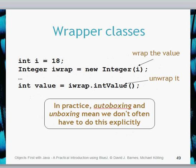One way — the long-winded, explicit way — is to do this manually. You create a type int called i which is 18, and then you create your Integer object called iWrap. When you assign it, you create a new Integer object and pass the primitive type as a parameter to the constructor of the Integer object. To get the value back from the Integer object, you create a new value of type int and call the method intValue from the Integer class.